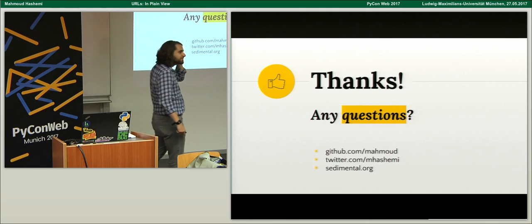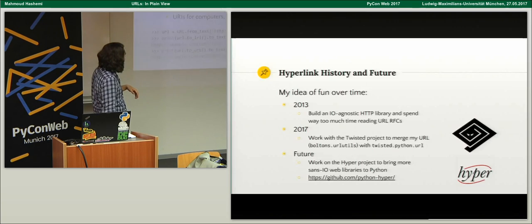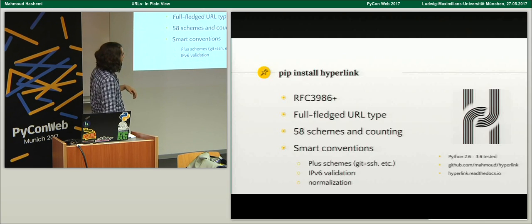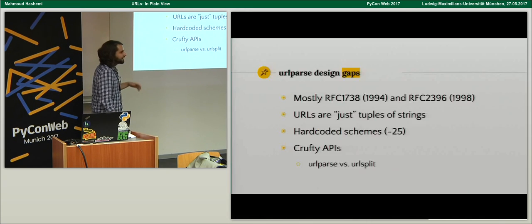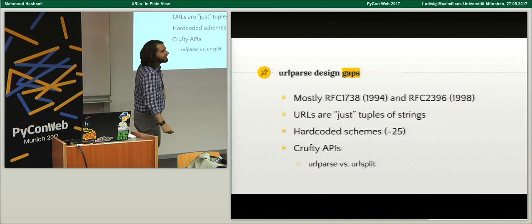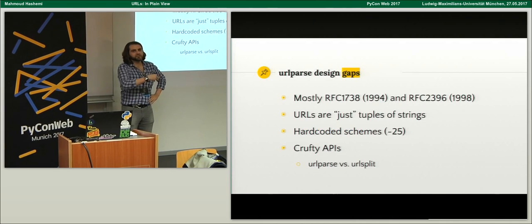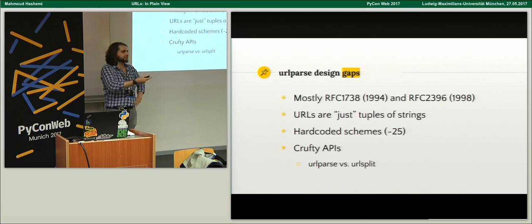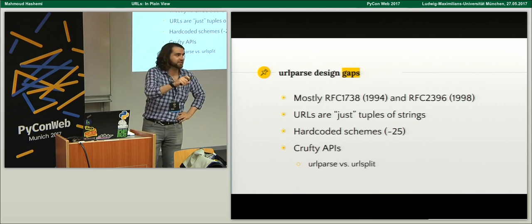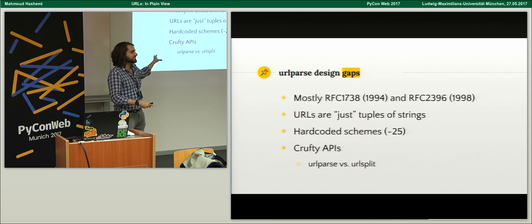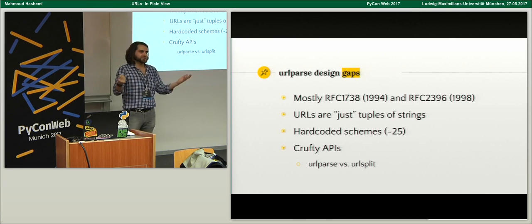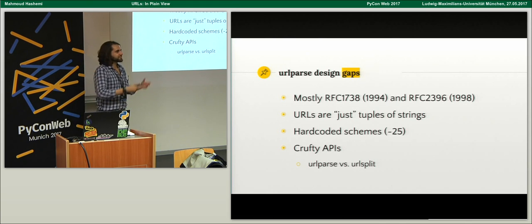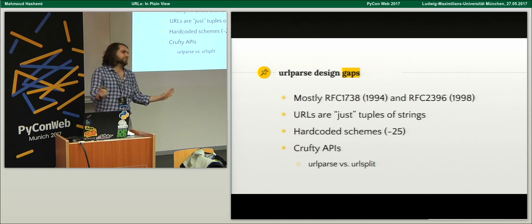Q: What's the actual difference between urlparse and urlsplit? A: When URLs were still being standardized, they didn't know if they needed path parameters separated by a semicolon or colon. So they built that in — but nobody really uses those, and you probably don't want to start using them. It's 2017 and URLs are pretty stable. So the standard library ended up with this urlparse/urlsplit confusion. Hyperlink doesn't suffer from those issues.